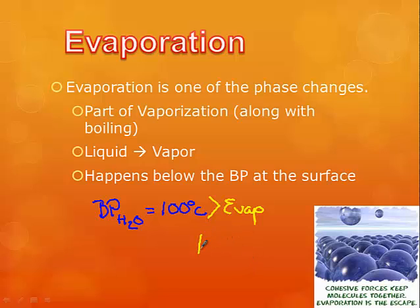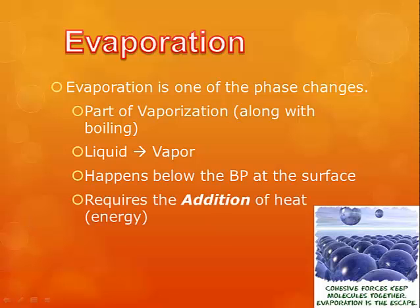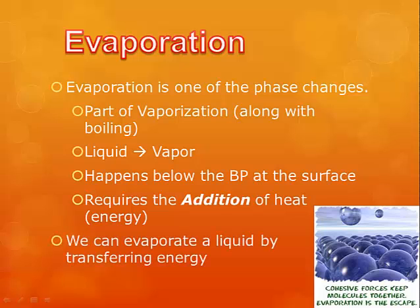Evaporation can occur anywhere between 1 and 99 degrees Celsius — we still have liquid converting into vapor, but below that boiling temperature. Only some of those particles have enough energy to vaporize, and only the particles at the surface of the liquid will vaporize. The closer we get to the boiling point, the more evaporation we'll have. Like boiling, evaporation does require the addition of heat — we need to add energy to evaporate a liquid into the vapor phase.